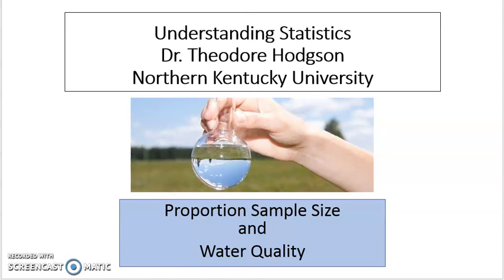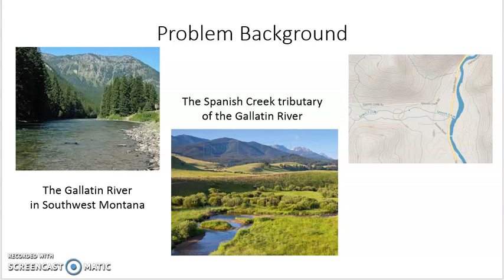As you may recall from an earlier video, we focused on a problem on the Gallatin River, which is a river in southwest Montana flowing out of Yellowstone Park. A small tributary, the Spanish Creek, flows into the Gallatin River just north of Bozeman, Montana.